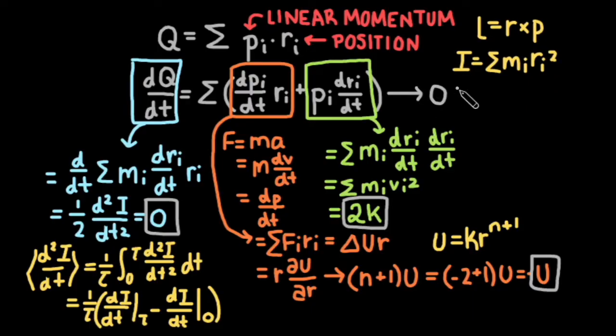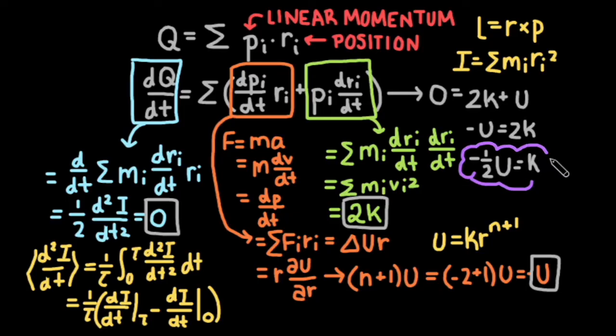We have 0 equals 2 times k plus u. We can move the gravitational potential to the other side of our equation and divide by 2 to get the equation we started with. This right here is the Virial Theorem. Cool!